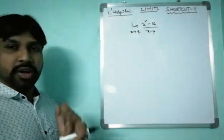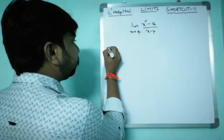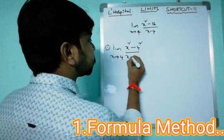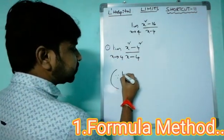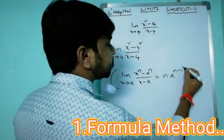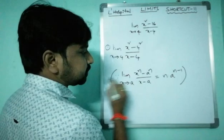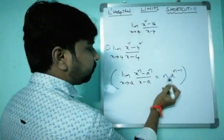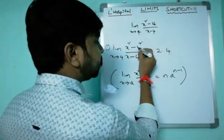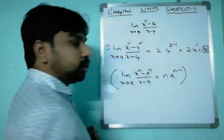The first way is by using the formula method. We write limit x tends to 4, (x² - 16) / (x - 4). This involves the formula: limit x→a of (xⁿ - aⁿ) / (x - a) = n·aⁿ⁻¹. Here, n = 2 and a = 4, so the answer is 2 × 4¹ = 8.